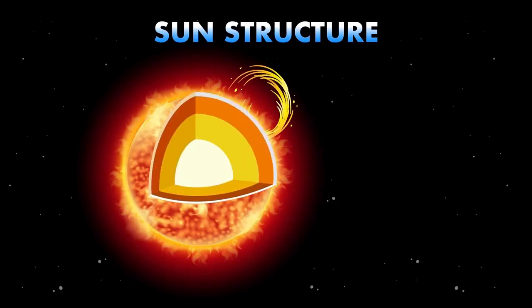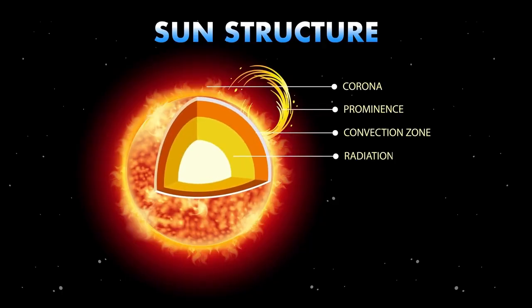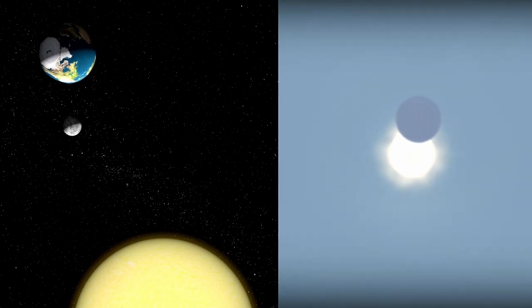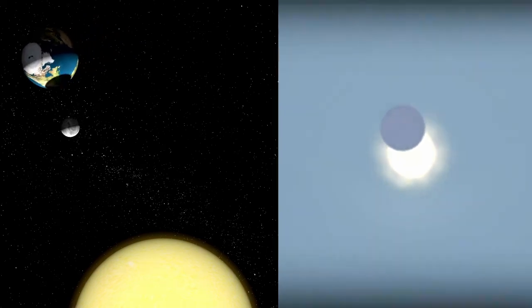and Betelgeuse is nearing the conclusion of its evolution. Having transitioned from a hot blue star to the cooler red supergiant visible today, it is now undergoing internal shifts as it burns through its nuclear fuel, shedding mass and altering structurally from within. The star's red hue is one of its most recognizable traits. Unlike the Sun, which shines a yellowish light due to a higher surface temperature,